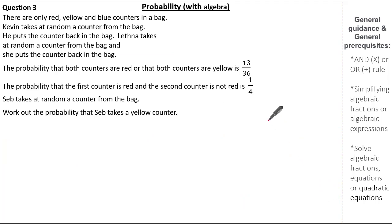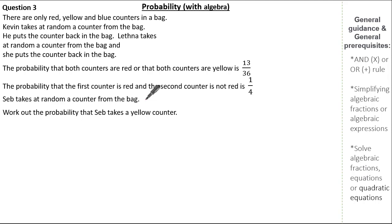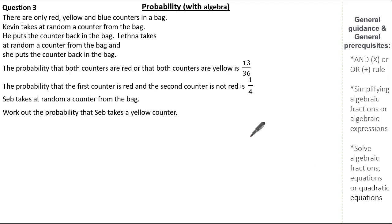So let's have a look at our last and probably hardest question. There are only red, yellow, and blue counters in a bag. Kevin takes at random a counter and puts it back. Lethener takes at random a counter and puts it back. The probability that both counters are red or both are yellow is 13 over 36. The probability that the first counter is red and the second is not red is 1 quarter. Seb is going to take a counter at random — work out the probability that Seb takes a yellow counter. See if you can give it a go.